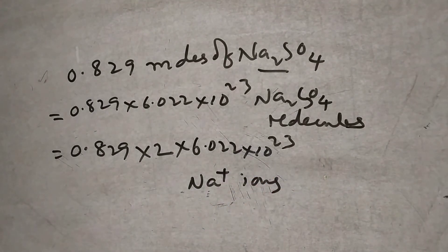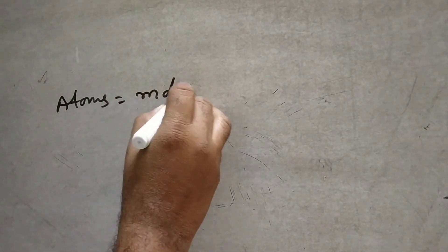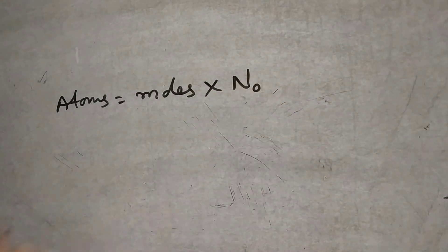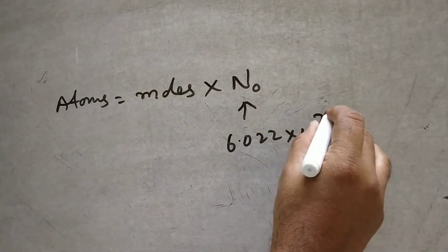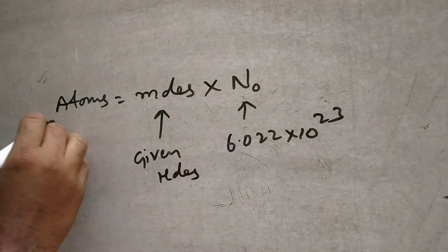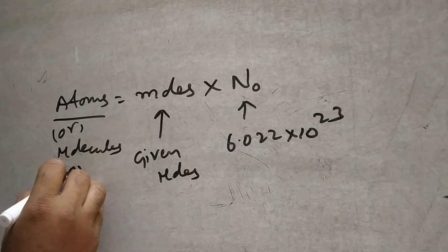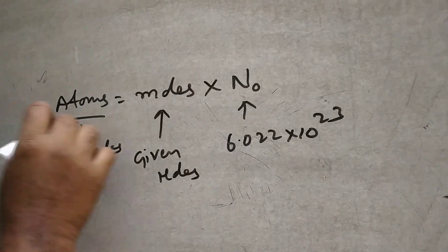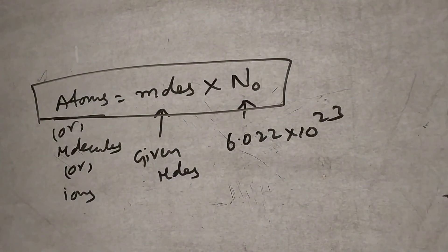Finally, to conclude: if you want to convert into atoms, molecules, or ions, and moles are given, multiply by Avogadro's number N₀ or Nₐ, which is 6.022 into 10 to the power of 23. Number of particles = number of moles into Avogadro's number. This is Dr. JMR Chemistry. Thank you.